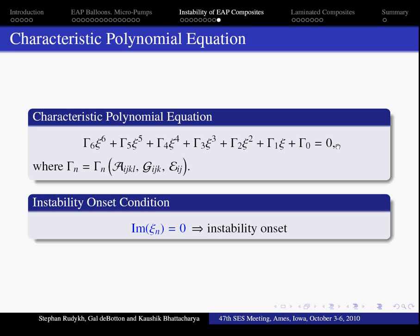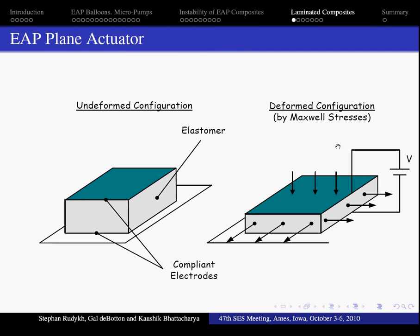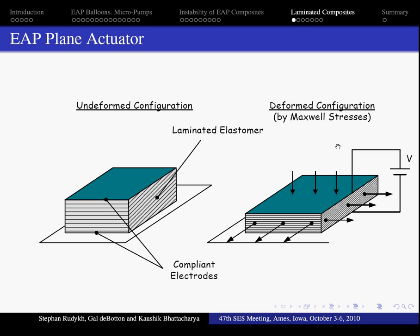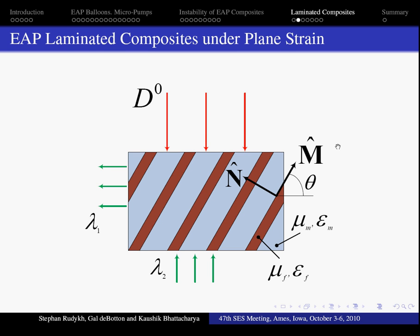As an example, we implement the condition to a class of laminated composites. Again, we are back to the actuator and now we substitute the homogeneous dielectric by a laminated one. And the laminate is characterized by a lamination angle θ. Each phase is characterized by the electric and elastic constants.